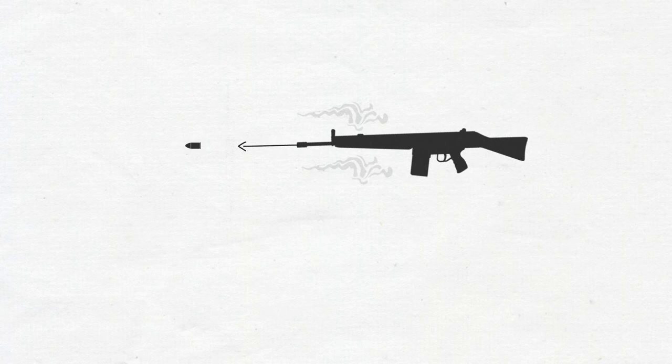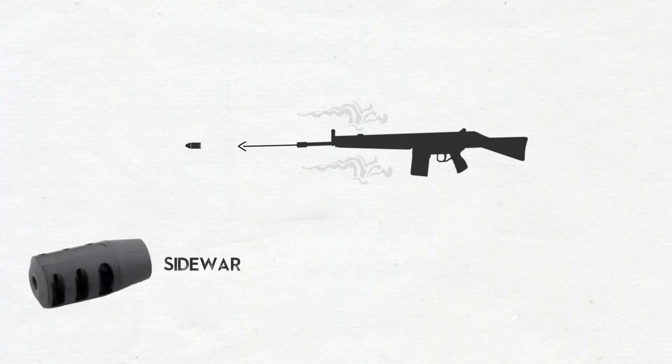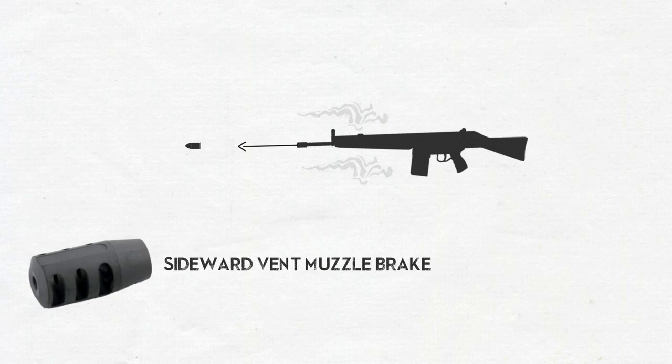Of course, this also means the gases are directed towards the shooter which is not desired by any means. Sideward brakes are also commonly used muzzle brakes.